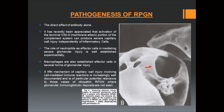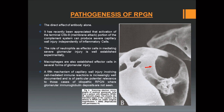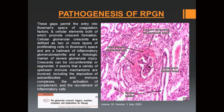Five mechanisms have been postulated: direct effect of antibody alone; terminal membrane attack complex; role of neutrophils; macrophages acting as effector cells; and cell-mediated immune reaction, which is increasingly well documented, particularly relevant to idiopathic RPGN cases where glomerular immunoglobulin deposits are not seen. These gaps permit entry into Bowman's space of coagulation factors and cellular elements, both of which promote crescent formation. Cellular glomerular crescents are defined as two or more cell layers of proliferating cells in Bowman's space and are the hallmark of inflammatory glomerulonephritis. Upstream immune mechanisms include deposition of autoantibodies, immune complexes, and activation of complement and recruitment of inflammatory cells.